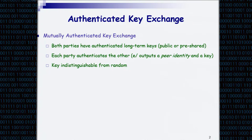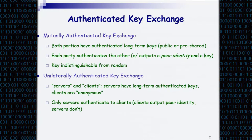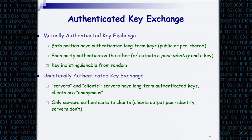We want the key to be secure in the sense of being indistinguishable from a random string. In the unilateral case, we have two types of parties — servers and clients — and in this case only the servers have long-term keys, while the clients are anonymous. At the end of the exchange, they both have a shared key, but only the servers have an identity output representing the identity of the peer they believe they are talking to. The servers don't output an identity; they don't know who they are talking to.